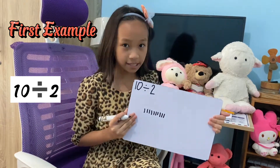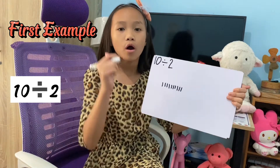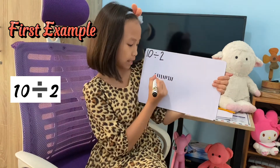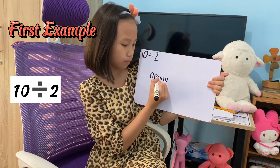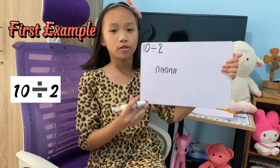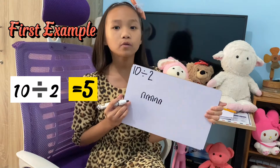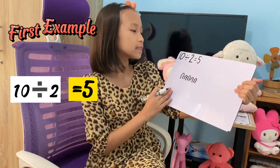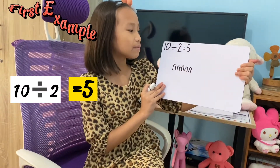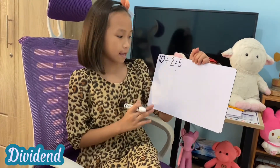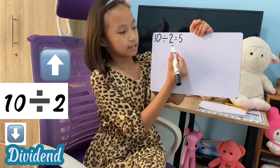Then kids, we're going to flip it by twos — so like this: one, two, three, four, five. So the answer is five. We're going to put the five in — so 10 divided by 2 equals 5.